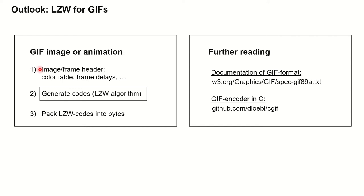As an outlook, LZW is a compression algorithm that's used a lot — for instance in GIF images and animations, where it really forms the core part of that format. For real GIFs, you have some additional things you need, like image and frame headers where you store color tables, delays between frames, and so on. There's also a procedure to pack LZW codes into actual bytes. If you're interested in all these details, have a look at the official documentation of the GIF format. And if you want to see an implementation of an encoder, have a look at the referenced repository.